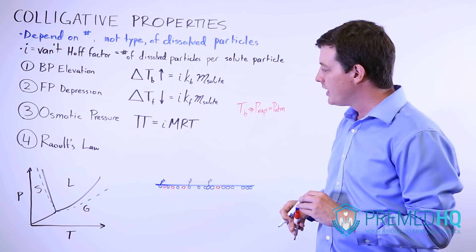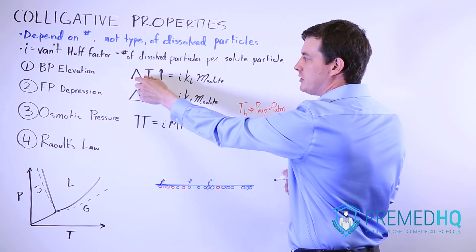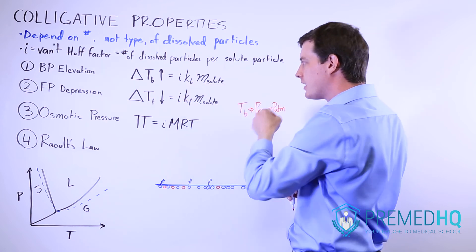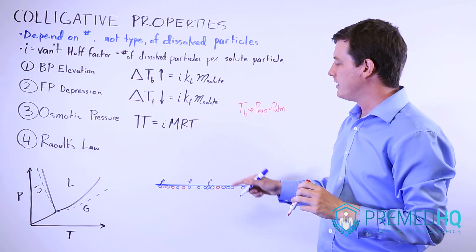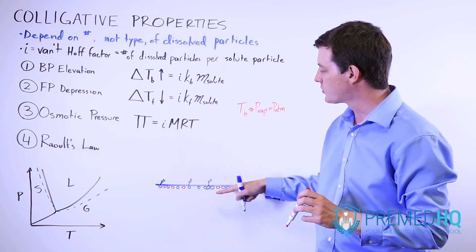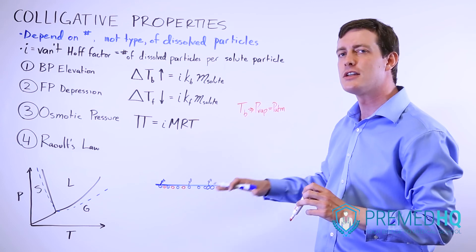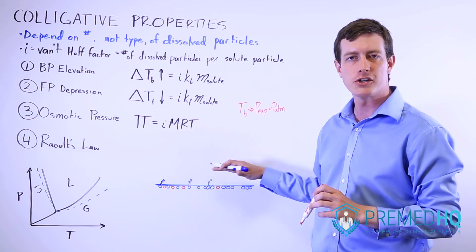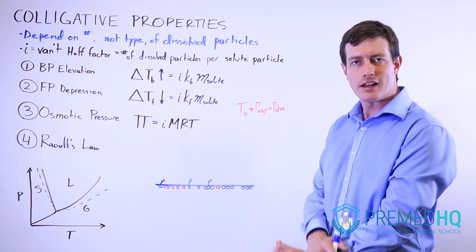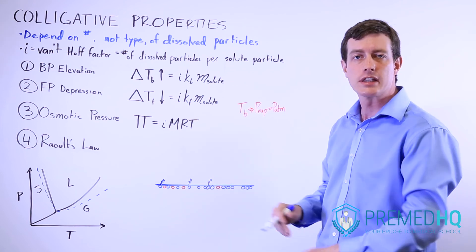The boiling point elevation formula is: change in boiling point equals the Van't Hoff factor times the boiling point elevation constant times the molality of the solute. This occurs because solute particles interfere with the liquid surface, preventing enough particles from entering the gas phase to reach the vapor pressure needed for boiling. In summary, particles at the surface prevent other particles from entering the gas phase.